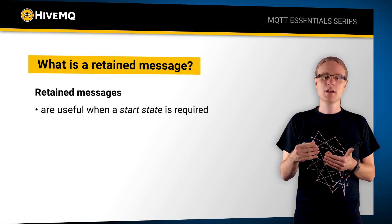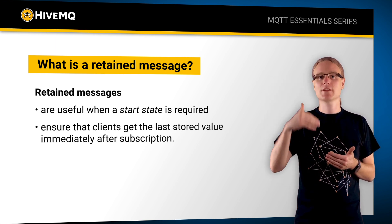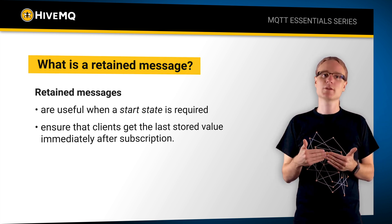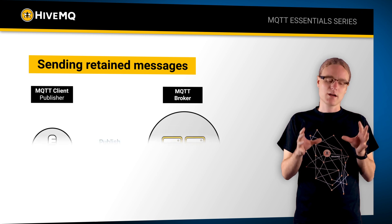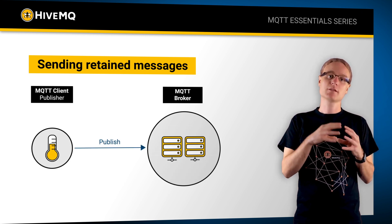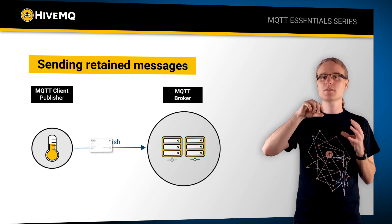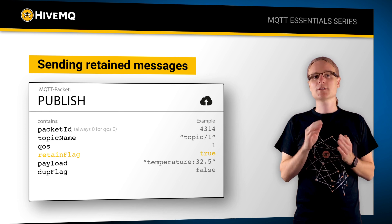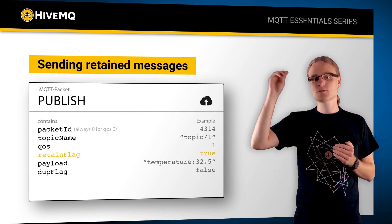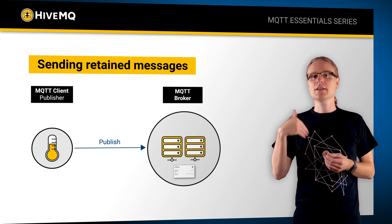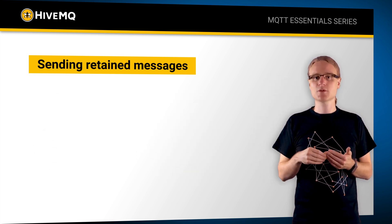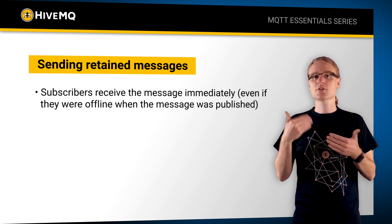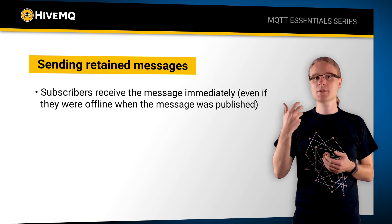You cannot wait seconds or even minutes until you get a fresh value pushed by the broker in case anybody produces data — you need the last known good value. A producing client publishes an MQTT publish packet to the broker and sets the retained flag to true. This signals to the broker that it needs to persist the message, and any new subscriber on this specific topic would get the value immediately, even if they were not online at the time the message was published.